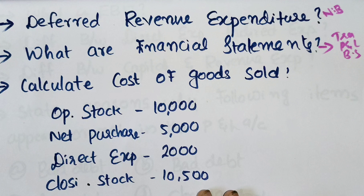For example, advertisement is usually a high amount — like the cost of shifting a business to a more convenient location. If a concern spent 5 lakh for advertisement and it is expected that the benefit lasts for 5 years, the amount treated as the current year's expenditure is only one-fifth of rupees 5 lakh. The balance for the remaining life will be treated as an asset.